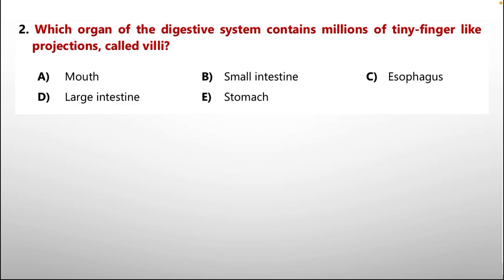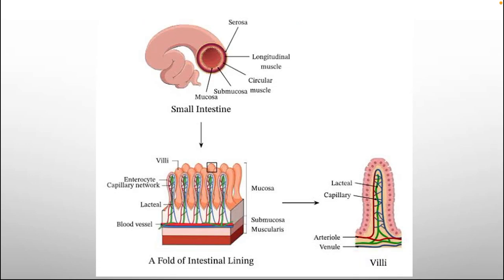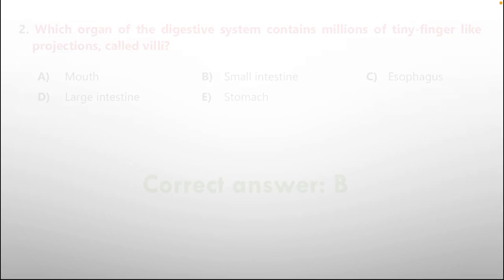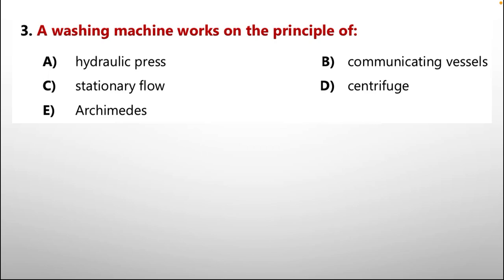For this question we are going through some details. Here is a diagram where the upper picture shows the outer side of the small intestine, and the lower picture shows the inner side of the small intestine in a zoomed-in view. We can see the finger-like projections called villi on the inner side of the small intestine. So the correct option is B: small intestine.